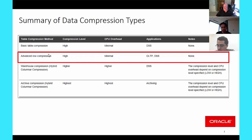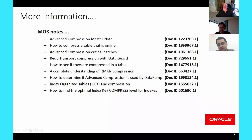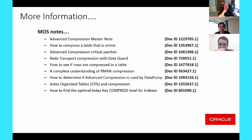Can you suggest any useful MOS notes? There are a good number of useful MOS notes for compression: the Advanced Compression master note, how to compress a table online, advanced compression critical patches, redo transport compression with Data Guard, how to see if rows are compressed in a table, a complete understanding of RMAN compression, how to determine if advanced compression is used by data pump, indexed organized tables and compression, and how to use the free index compression available since 9i through 18c. Most of these will be covered in future sessions.